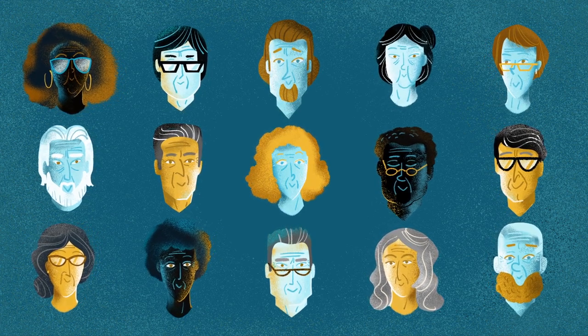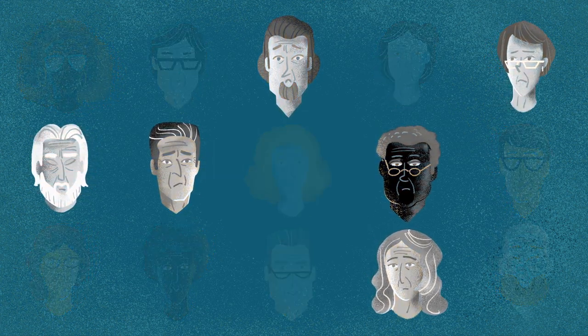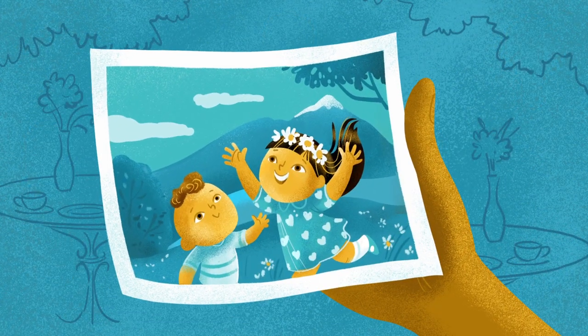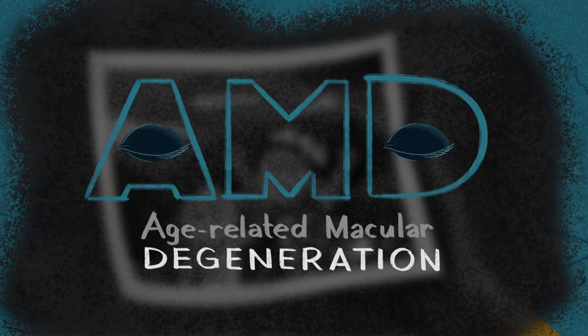You may have noticed that a lot of people will start losing their vision as they get older. A common cause of this is age-related macular degeneration, or AMD. By the age of 80, nearly one-third of us will have this condition.